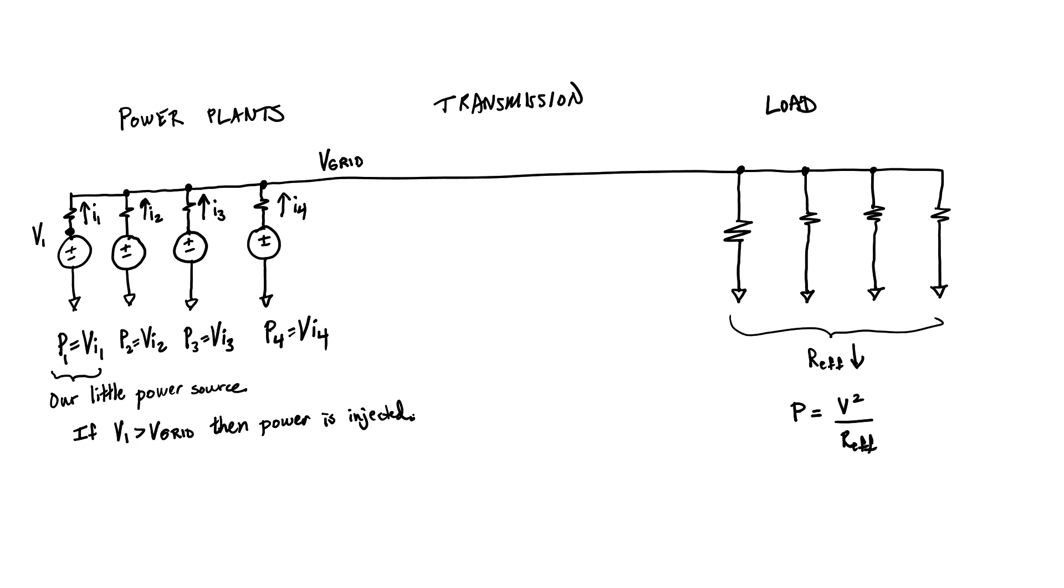Now going back to our problem here, how do we inject power to the grid? Let's now make the situation a little bit more realistic by replacing our DC sources with AC sources. Our grid voltage is now an RMS voltage and all of our power plants have to be sine wave generators and they all have to be in phase with one another.